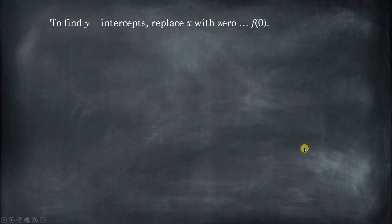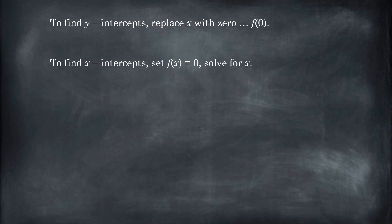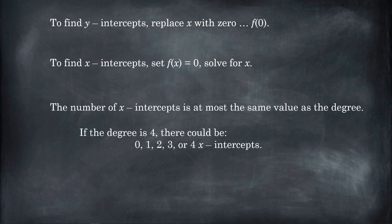Here's a recap: to find y-intercepts, just plug in zero for x. To find x-intercepts, set the whole thing equal to zero, factor it, and solve. The number of x-intercepts is at most equal to the value of the degree. So if you had a degree of four, you're going to have zero, one, two, three, or four x-intercepts.